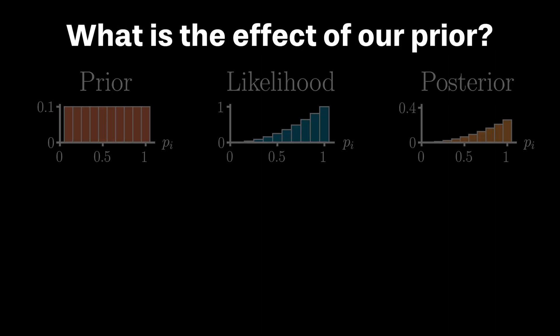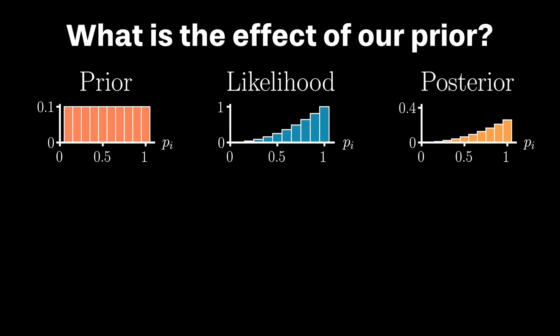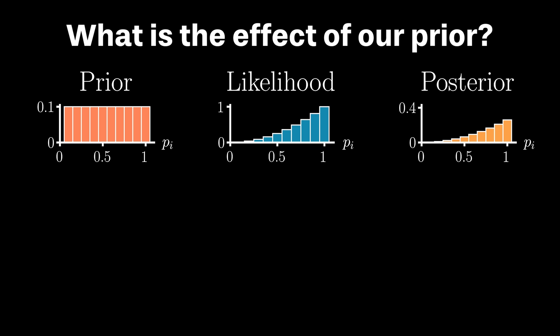Now, let's reset n to 2, but now alter our initial prior distribution to understand its effect on our posterior. Rather than a discrete, uniform distribution, suppose that you initially believed in one of the following prior distributions. The middle one suggests that you initially believed that p would be closer to 0, while the bottom one indicates that you initially believed that p would be closer to 1.